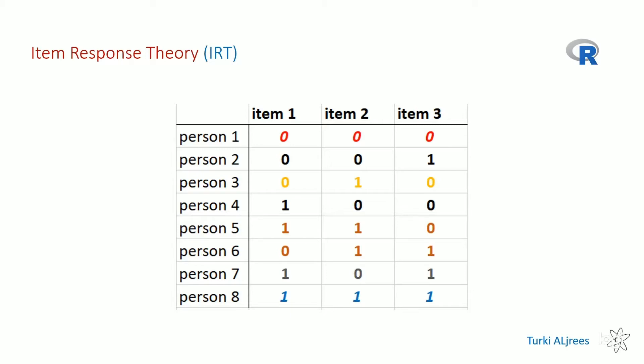Consider persons two and four. Imagine you are in a class with eight other students and I gave you a questionnaire. Anyone who answers zero gets no mark; anyone who answers one gets a mark. At the end I grade you A, B, C, or fail. Now you and person four got the same result — one mark each — but you answered different items.